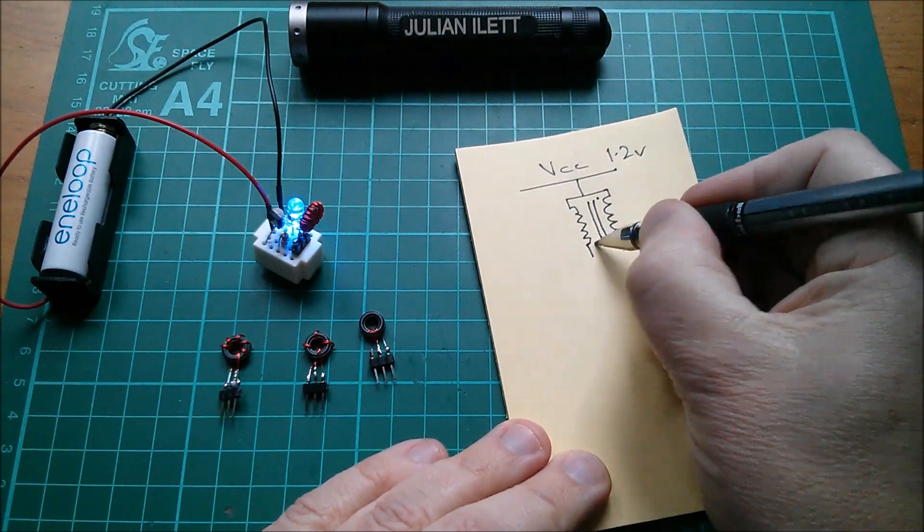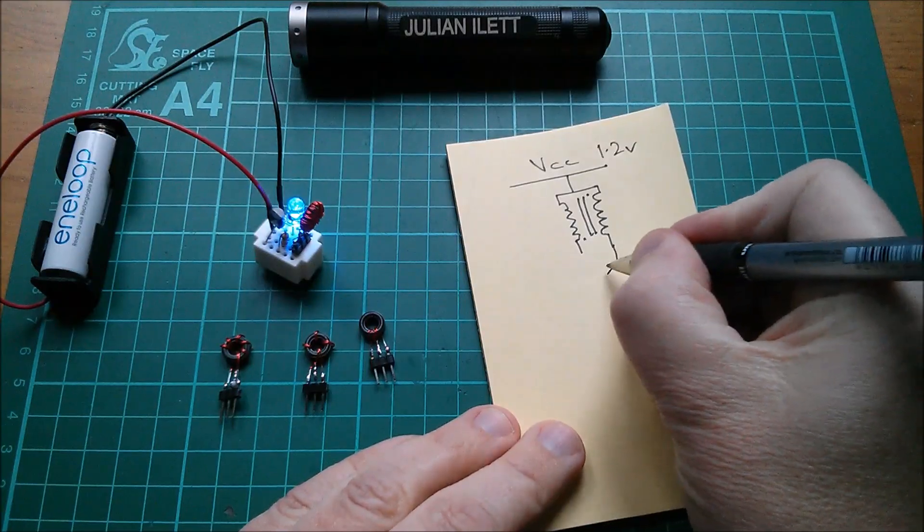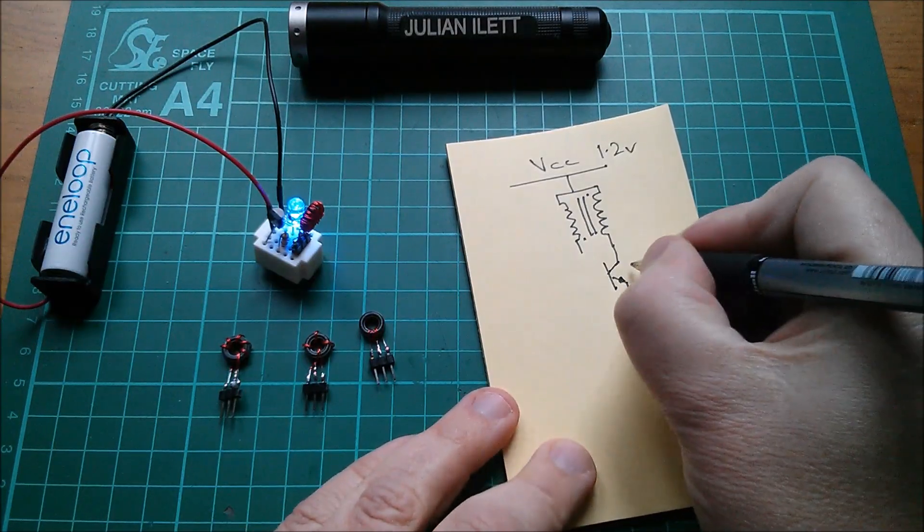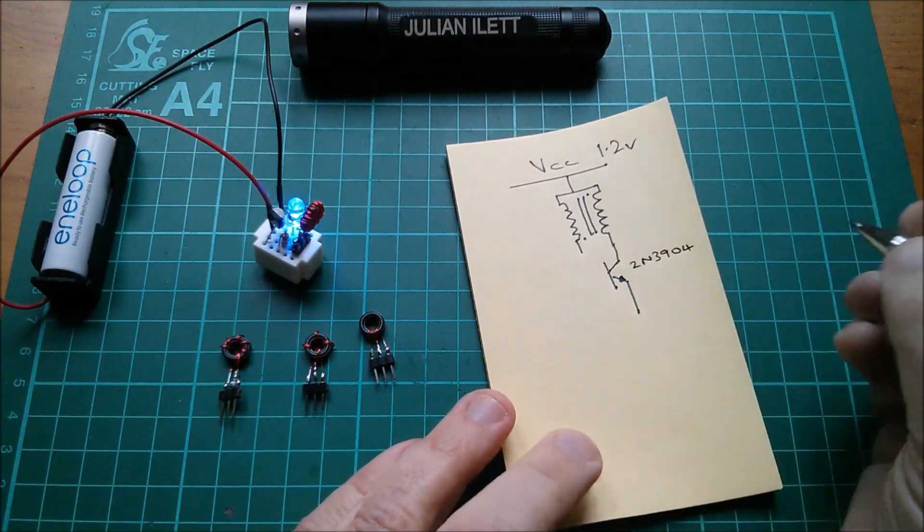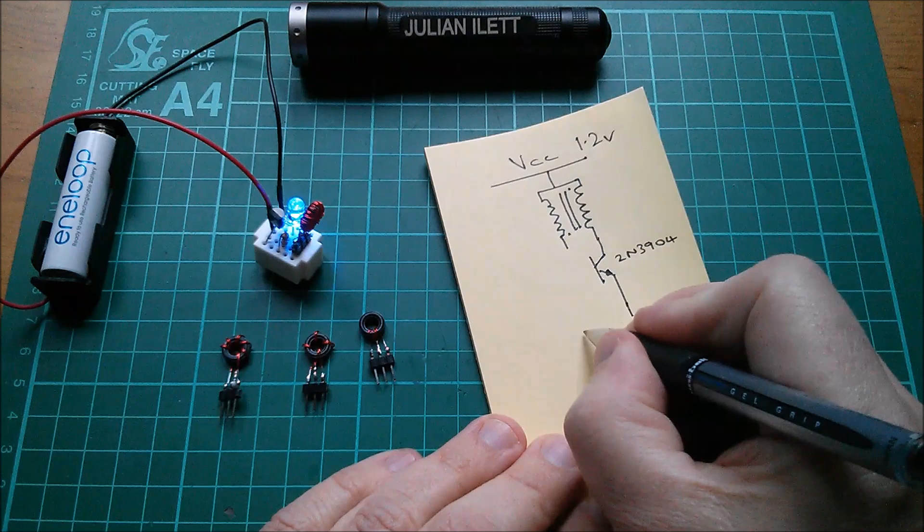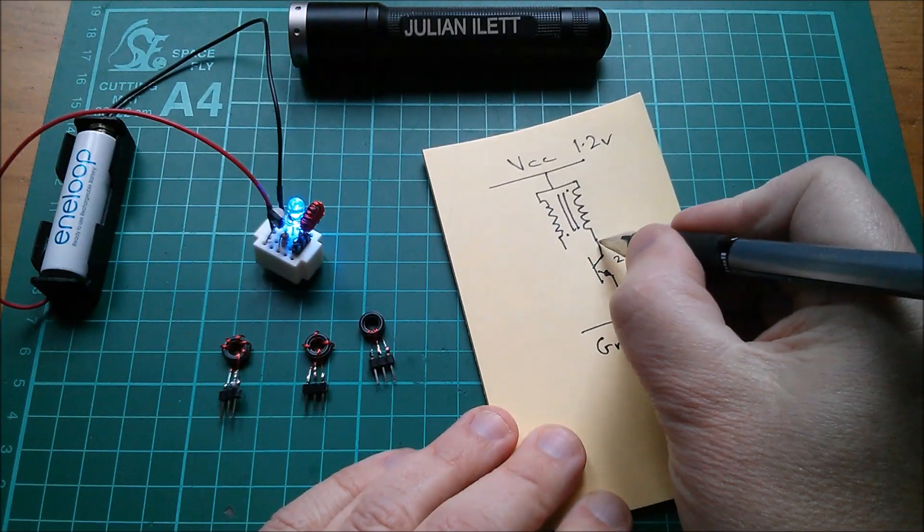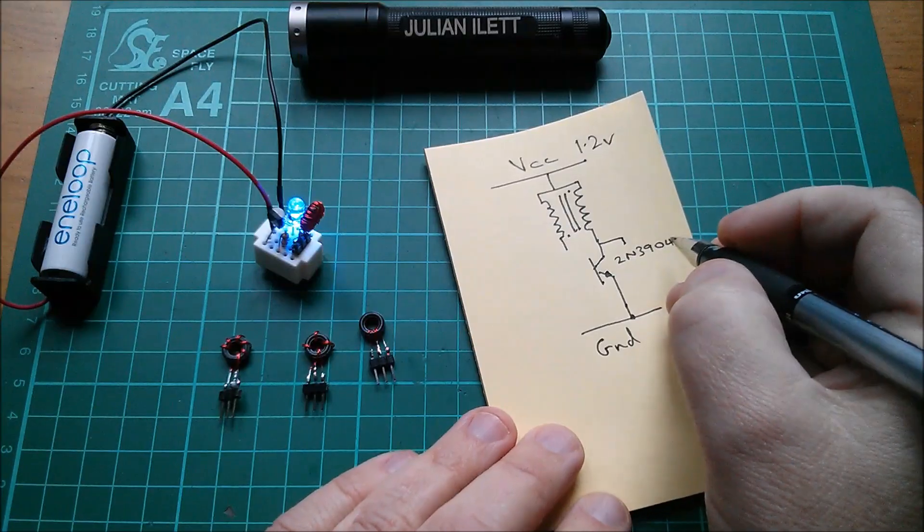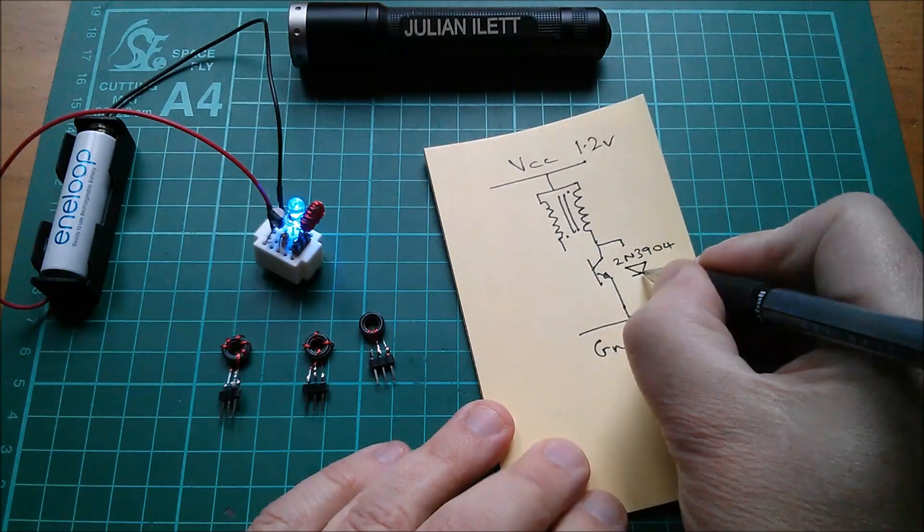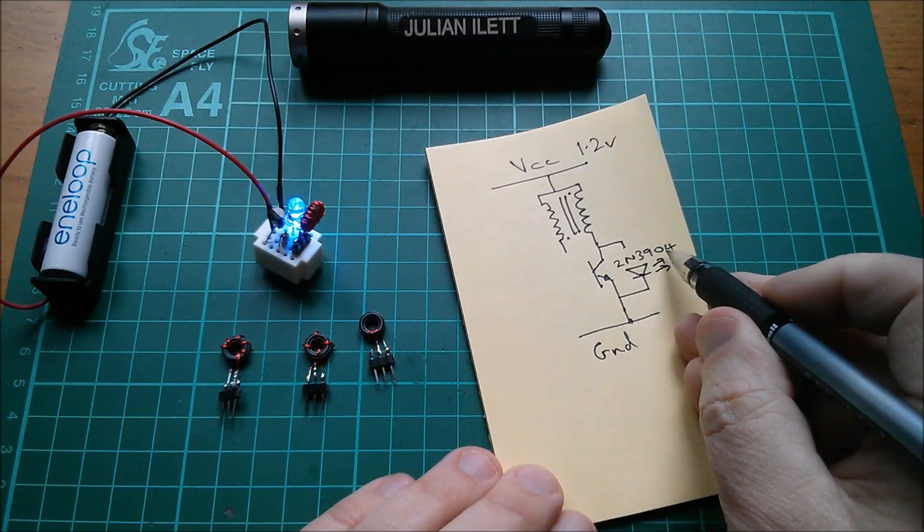Right, next we have a transistor, it's an NPN so we want an arrow coming out like that. I'm using a 2N3904 general purpose NPN transistor. And oh I've written that just where the LED goes, that's annoying. So that goes to ground. Right, the LED, well I'll draw it with a break, it'll kind of work. Now which way does it point? Yes, I think it points cathode to ground like so. So that's the light emitting diode.